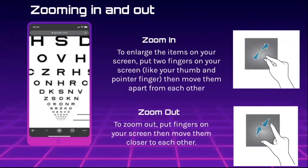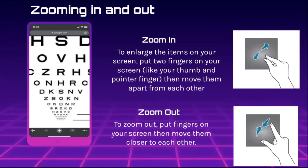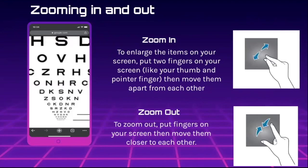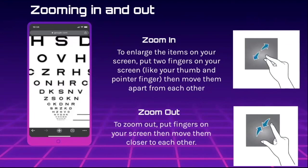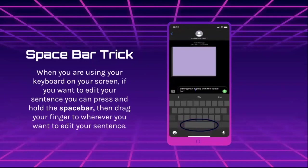To zoom in and enlarge items on your screen, put two fingers on your screen — like your pointer finger and thumb — and move them apart from each other. To zoom out, put your fingers on the screen and move them closer together. A spacebar trick: when using your keyboard on screen, if you want to edit your sentence, press and hold the spacebar and drag your finger to wherever you want to edit.